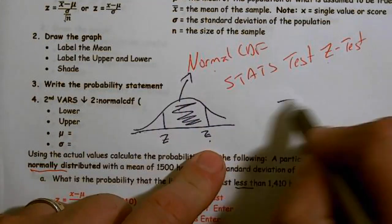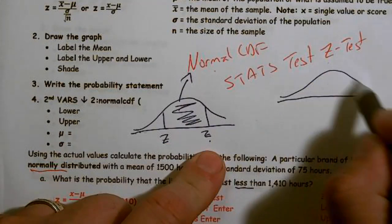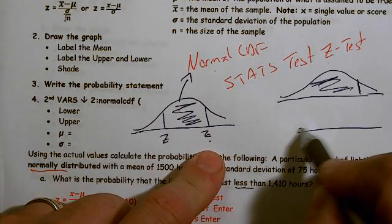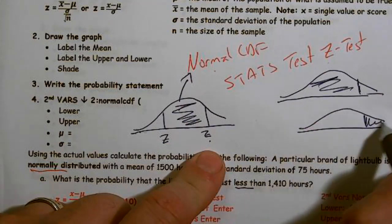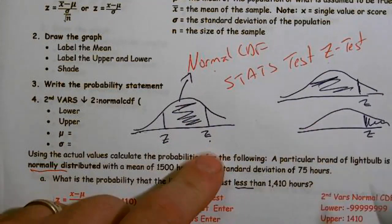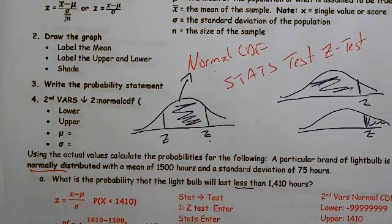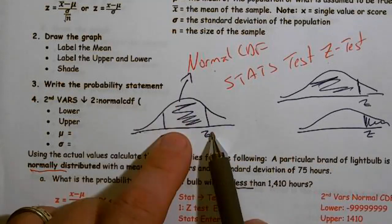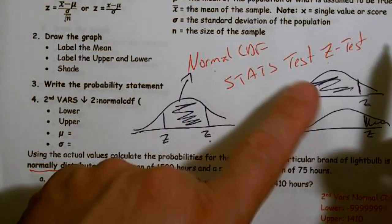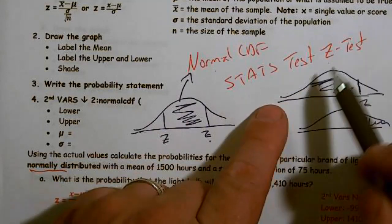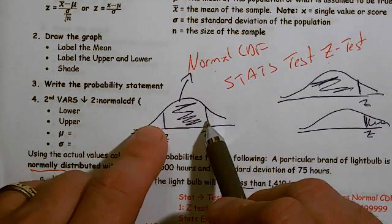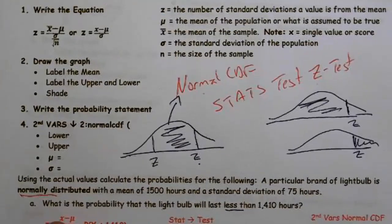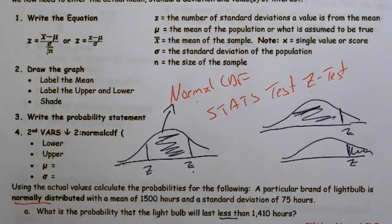The stats test Z-test, if I'm only shading one side, will automatically give me the actual Z scores. The problem is it doesn't handle the type of problems where you're shading between two values. So stats test Z-test is great for upper tail or lower tail, while normal CDF is probably what you want to use for in-between problems. We're going to focus on which one to use and when.